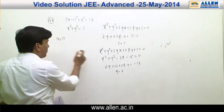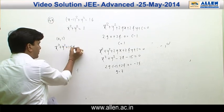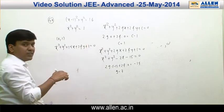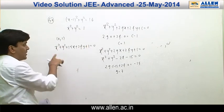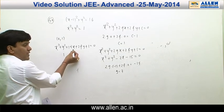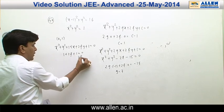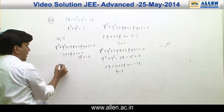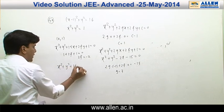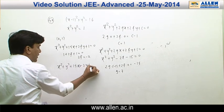The equation becomes x² + y² + 14x + 2fy + 1 = 0. Since the circle passes through (0, 1), substituting gives 0 + 1 + 0 + 2f + 1 = 0, so 2f = −2, giving f = −1. The required circle is x² + y² + 14x − 2y + 1 = 0.